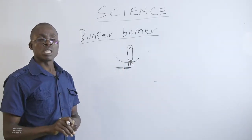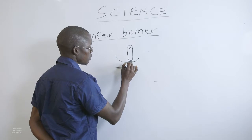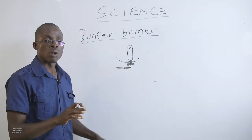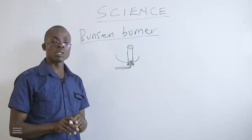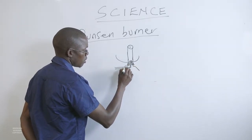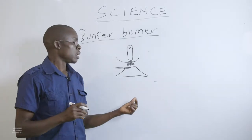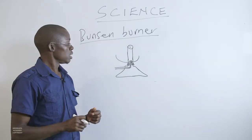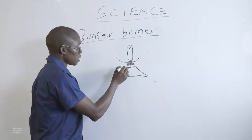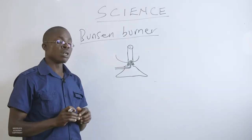At times you may want to limit the amount of air entering through the air hole, so we use what we call a collar. We use a collar to either open or close the air hole by rolling it either up or down to make sure the air hole is open or closed as needed. At the bottom part of the Bunsen burner we have the base, which gives the Bunsen burner stability so that it is stable at whatever point you place it, giving you proper heating.